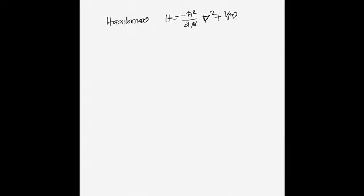In variational techniques, the first step is to choose a trial wave function. For this problem I choose the trial wave function φ = exp(−αR/β). In CSIR exams they sometimes give the trial wave function and ask you to find the ground state energy using the variational method.